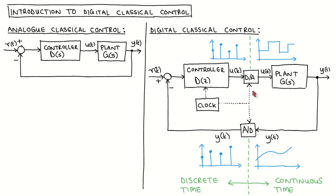We will then use this to design digital controllers in two different ways. The first approach is to approximately model the discrete time part as continuous time components, viewing the full system as a continuous time control system — this is called digital controller design by emulation. The second approach is to find an equivalent discrete time description for the continuous time part and view the full system as a discrete time system — this is called direct digital design.